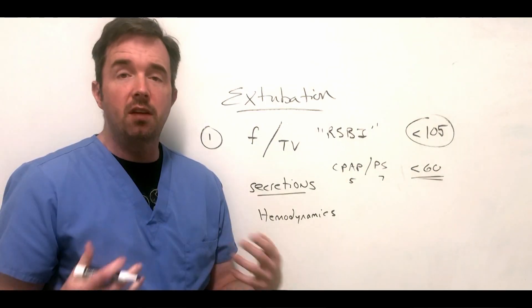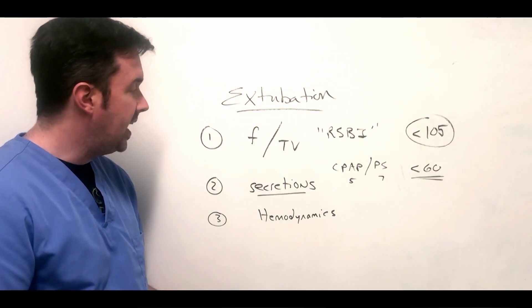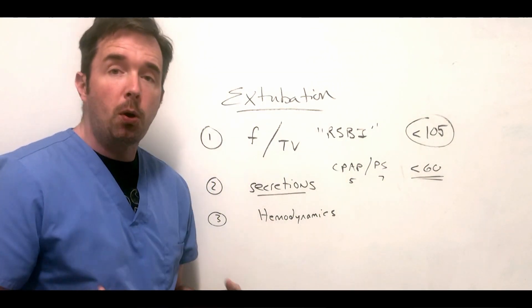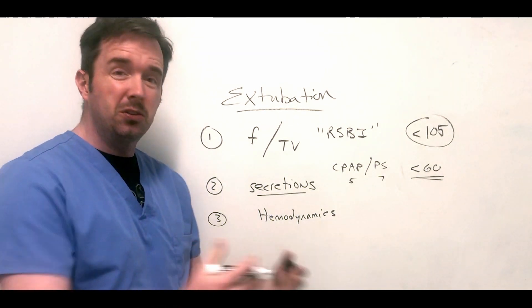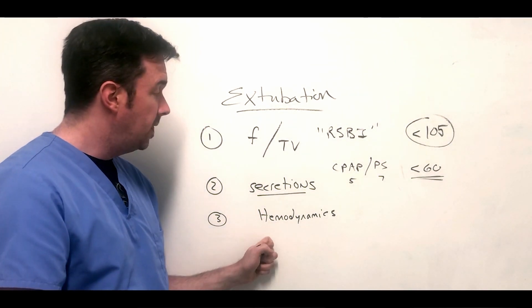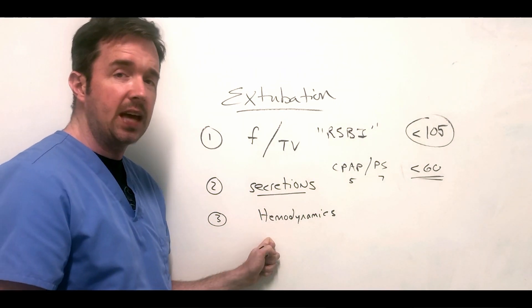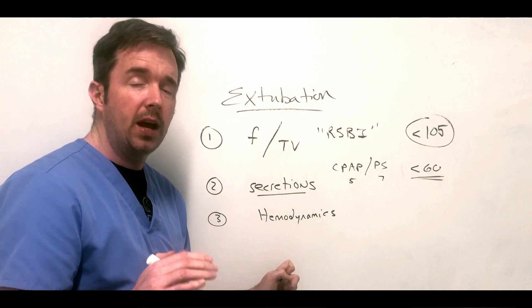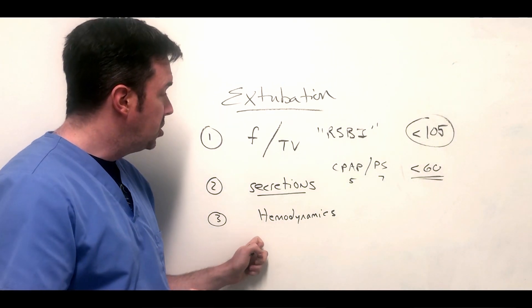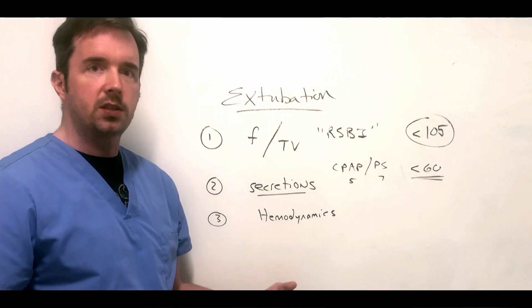Number three: how's their hemodynamic stability? Patients that are still on vasopressors, patients that let's say have cardiogenic pulmonary edema and you're still diuresing them and they're still having soft pressures - soon as you take away the positive pressure ventilation, a couple of things happen. Number one, their afterload actually goes up. Number two, they're going to be more awake because the sedation is coming off.